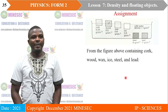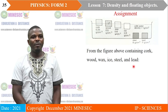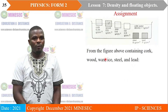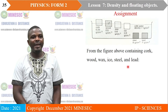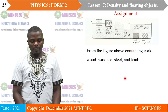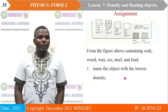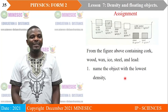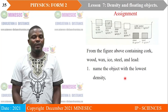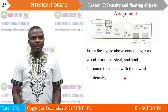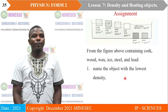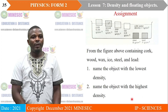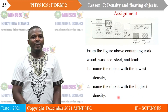Assignment: From the figure above containing cork, wood, wax, ice, steel and lead — Question 1: Name the object with the lowest density. Question 2: Name the object with the highest density.